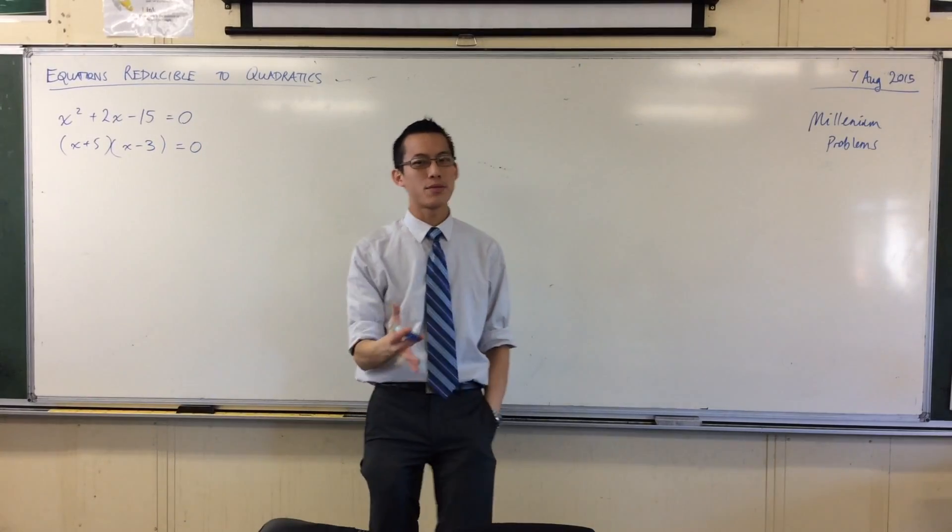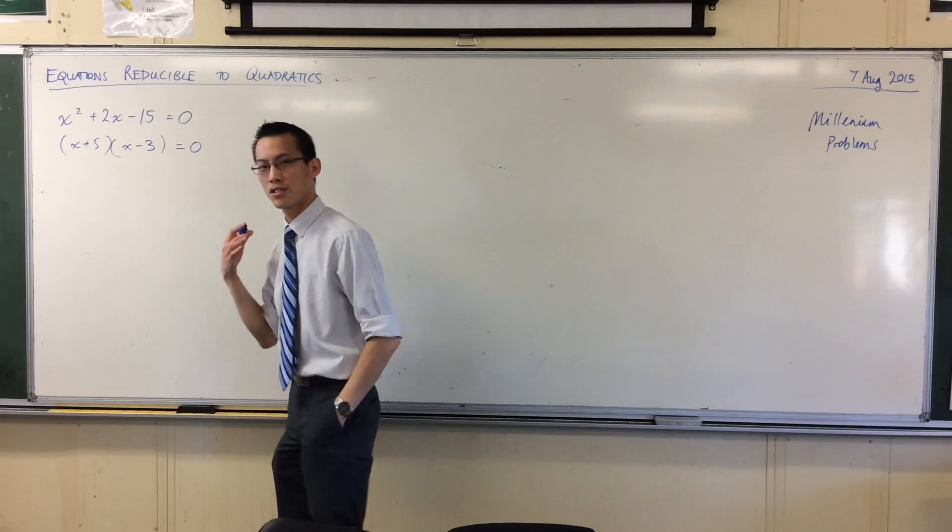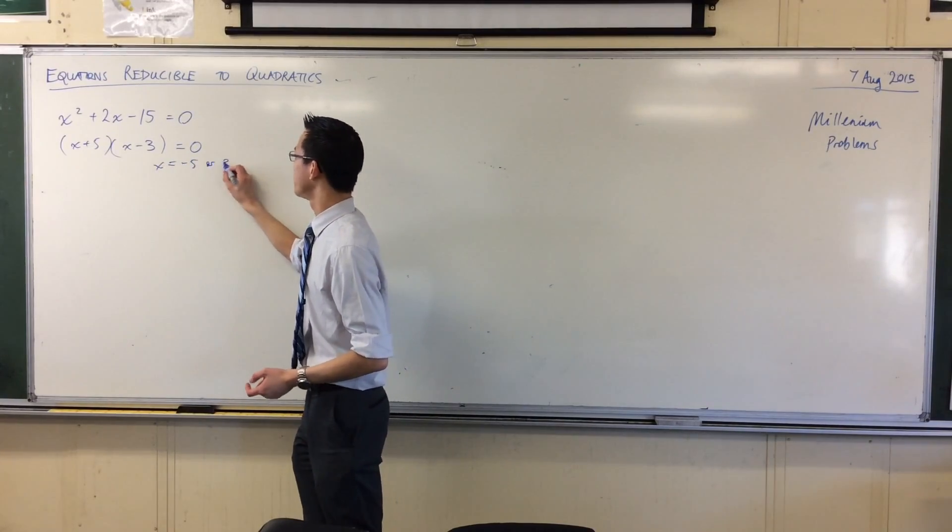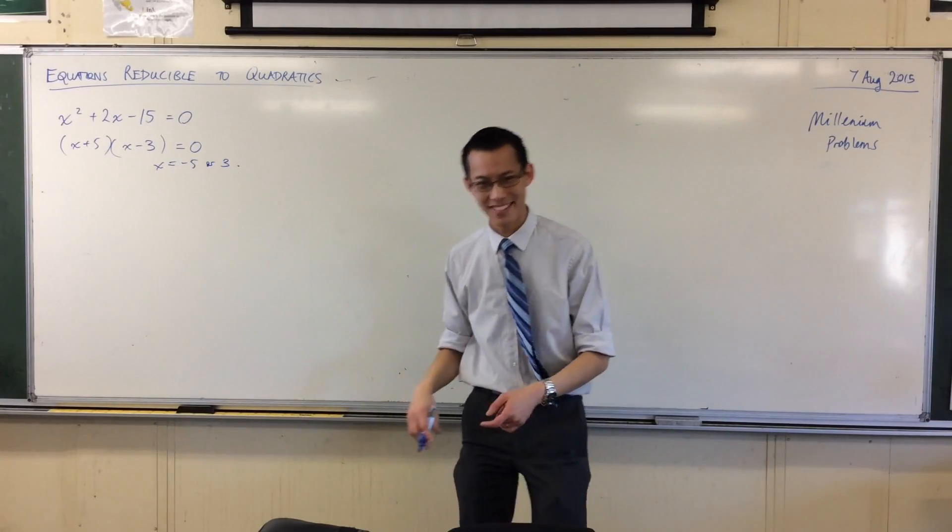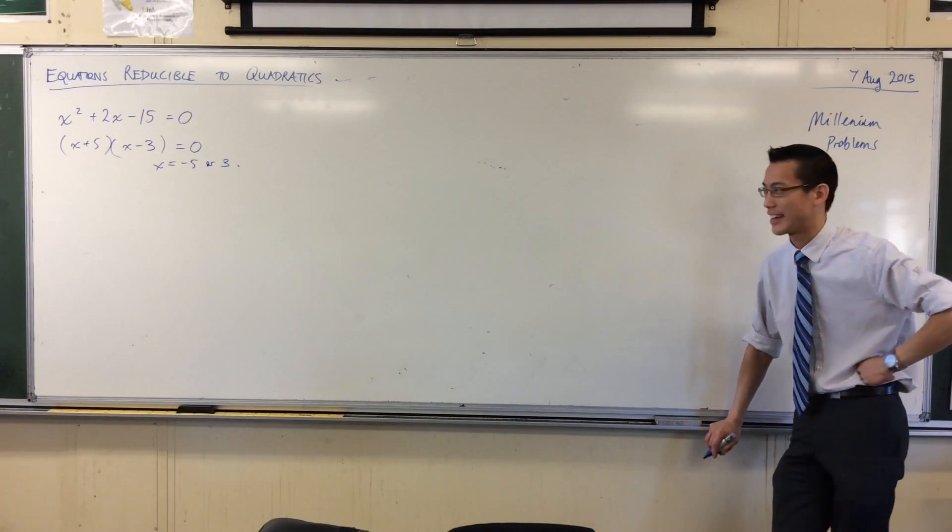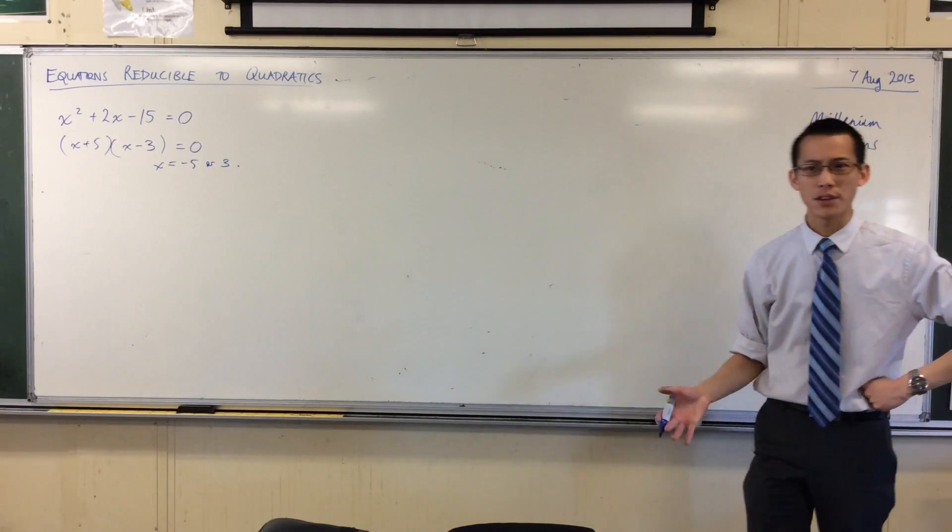Excellent. So here's one out of which we get our two solutions or zeros or roots. In this case, they are negative four? Five. It's been a long day, trust me. Negative five and three. So far, so good.